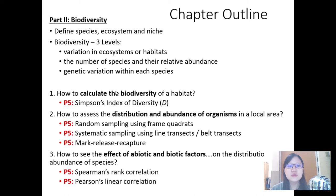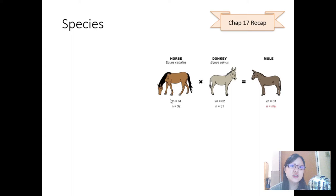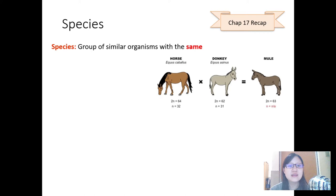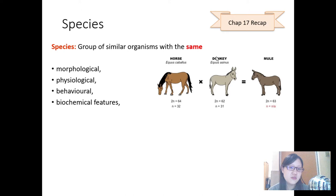Let's start off with the definition of a species. This is a chapter 17 recap. I can't highlight how important this definition is because it always comes out in past year papers and the key words in this definition always appear as well. Species is a group of similar organisms with the same, or similar, morphological, physiological, behavioral, and biochemical features which can, most importantly, interbreed to produce fertile offspring.